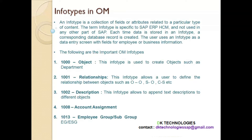Let's see the info types in OM. If you recall the personal administration module, the info types in personal administration start with 0000 because SAP has given that range 0000 to 0999 for personal administration info types. But for OM, the range SAP has given is from 1000 to 1999. The concept of info types is the same for both OM and PA — the purpose is to store information — but each info type has its own specific purpose.